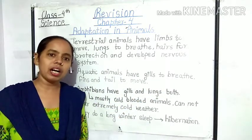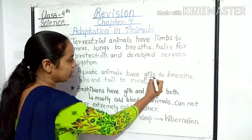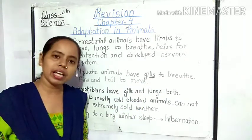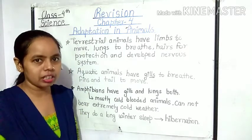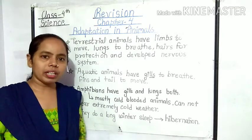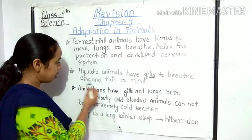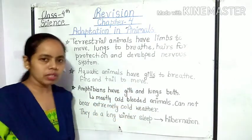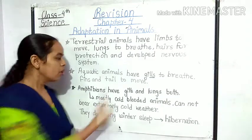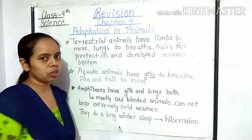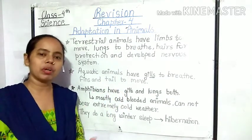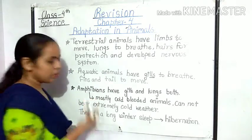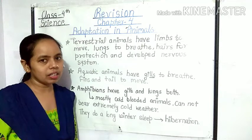Aquatic animals have gills to breathe in water. Aquatic animals, बेटा, अपने gills — gills को हिंदी में बोलते हैं गलफड़े — aquatic animals अपने gills की help से पानी में सांस लेते हैं। And they have fins and tail to move in the water. उनके पास fins होते हैं जो उनके पंख होते हैं और tail होती है जो उनकी पूँछ होती है, जो उन्हें swim करने में बहुत ही help करती है।